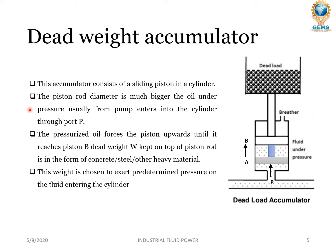The piston rod diameter is much bigger. The oil under pressure, usually from the pump, enters into the cylinder through port P. When there is more pressure coming in, this piston will move up. The pressurized oil forces the piston upwards until it reaches position B. The dead weight W kept on top of the piston rod is in the form of concrete, steel, or other heavy material.